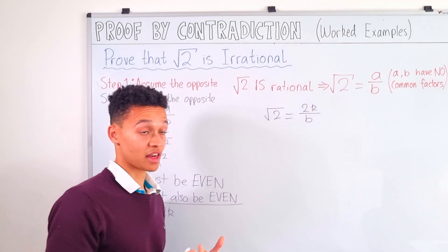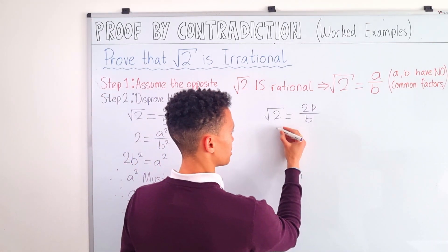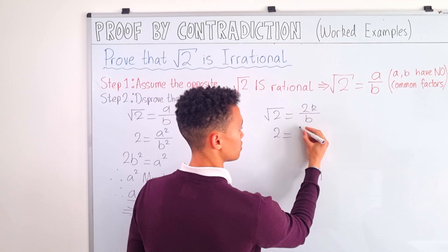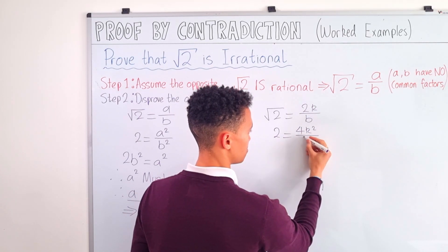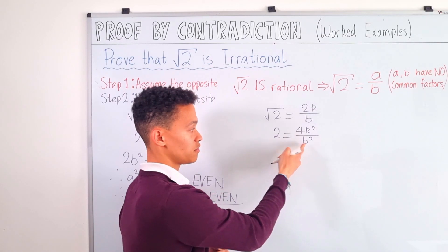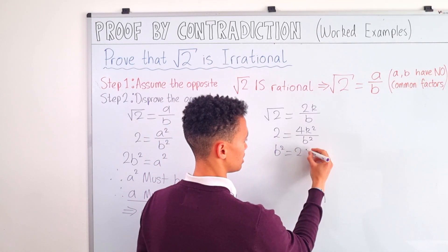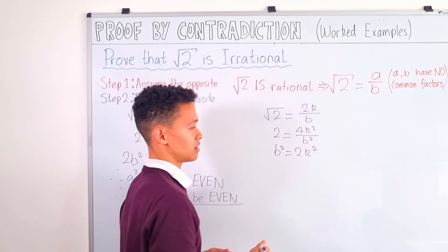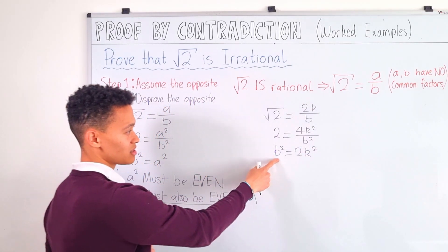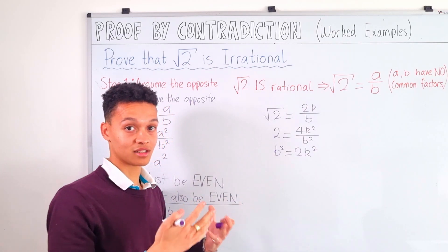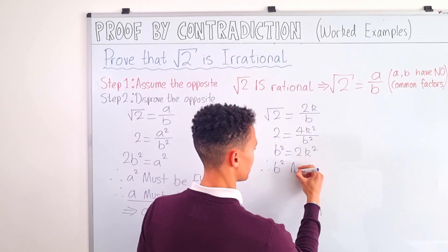We do a similar thing to before: square both sides and rearrange. Squaring both sides gives 2 equals 4k squared over b squared. Moving b squared to the left hand side gives b squared equals 2k squared. For the exact same reason, b squared can be expressed as two times an integer, therefore b squared must be even.